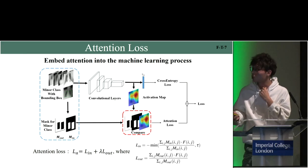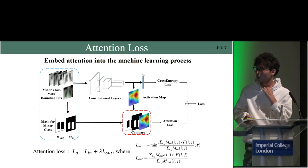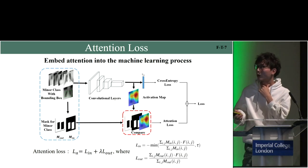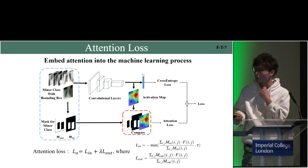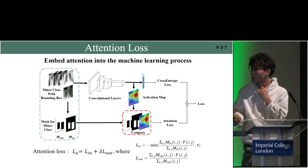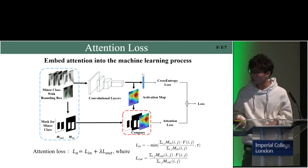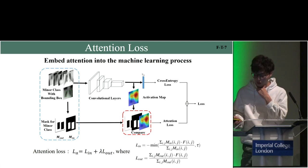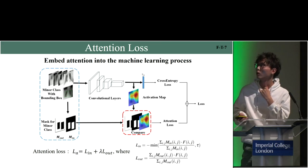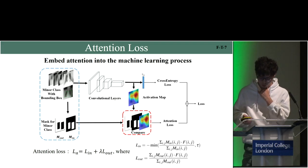The attention loss is used to attend to the lesion regions. In practice, the attention loss can be split into two loss items: the inner loss and the outer loss. The inner loss helps the classifier learn to attend to the lesion regions, while the outer loss helps the classifier decrease attention outside the lesion regions. These loss items are given by the activation map, and the mask is generated from the bounding box on the minor class.